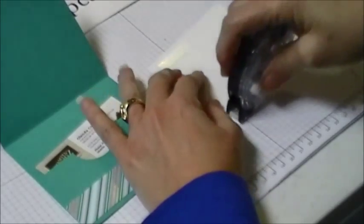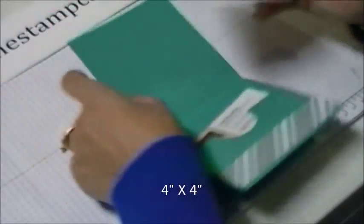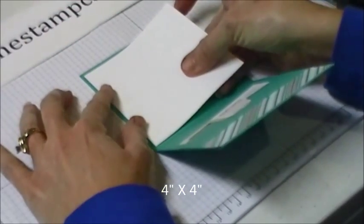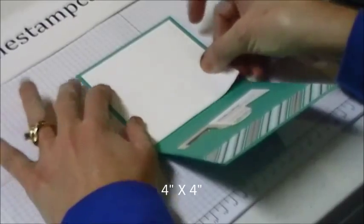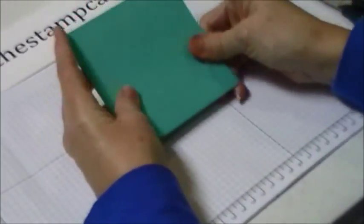Now for the top, you're going to cut a piece of white that is 4 by 4. This is so that you can write on the inside or stamp a sentiment on the inside, whatever you would like on the top. And then you just need to decorate the front.